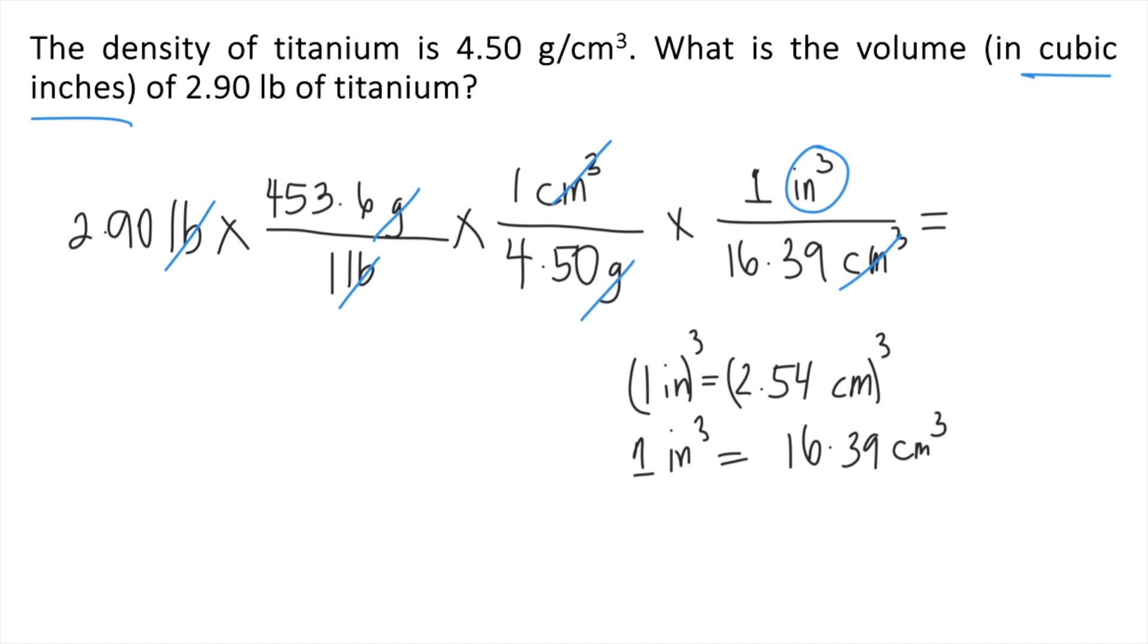So all you have to do is solve this in your calculator. That's 2.90 times 453.6 divided by 1, times 1 divided by 4.50, times 1 divided by 16.39.